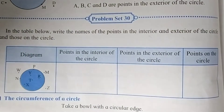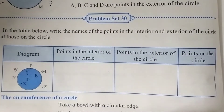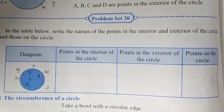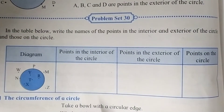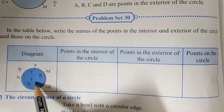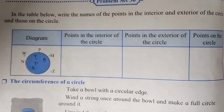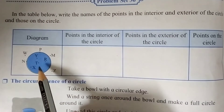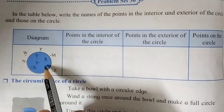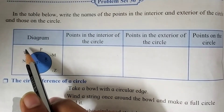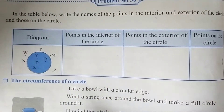Here we can see a diagram is given, and a colored part is given here also. When we observe this diagram we can find that there are some points in the colored part and some are outside the colored part.